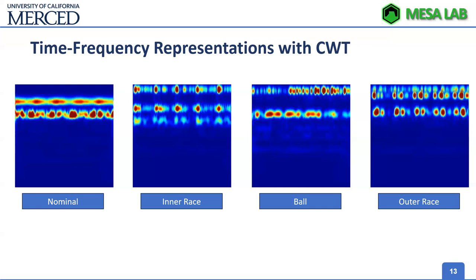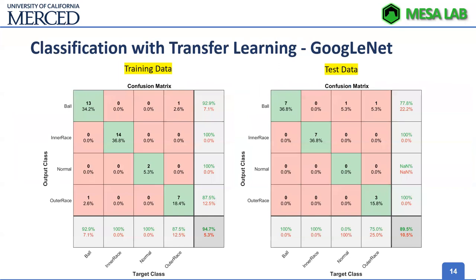After converting everything into image representations, we applied transfer learning. Instead of training an image classification algorithm from scratch, we used the GoogleNet architecture. We split our data into training and test sets randomly and applied the algorithm. Results showed 95% accuracy on the training data and 89% accuracy on the test data.